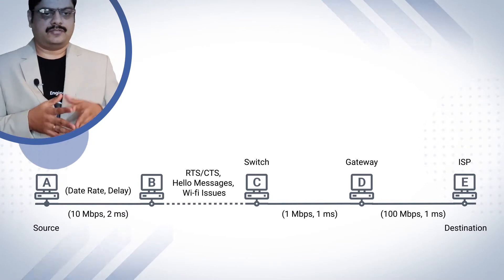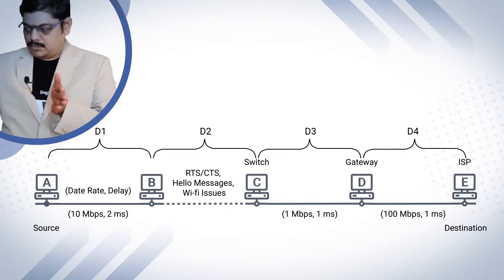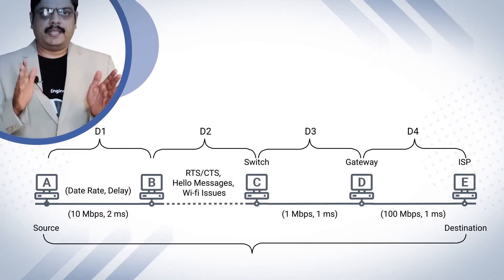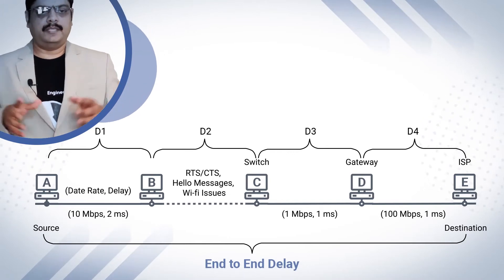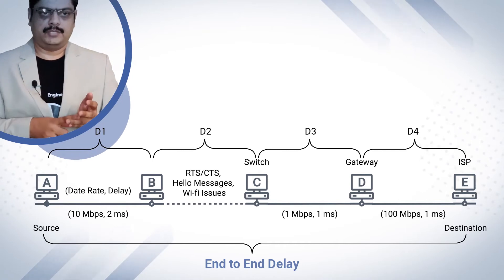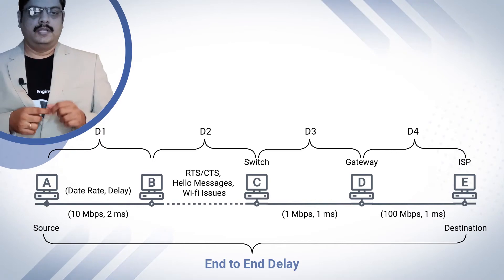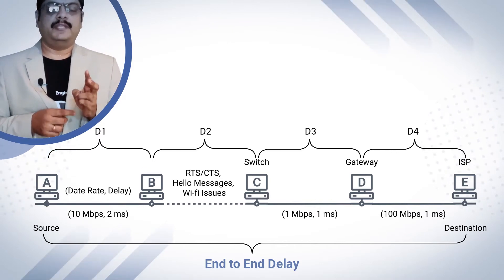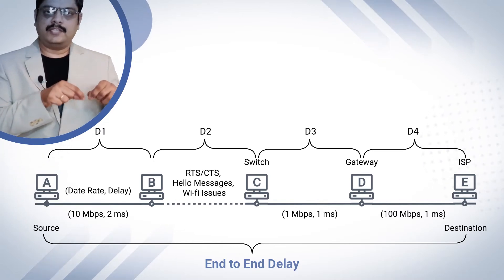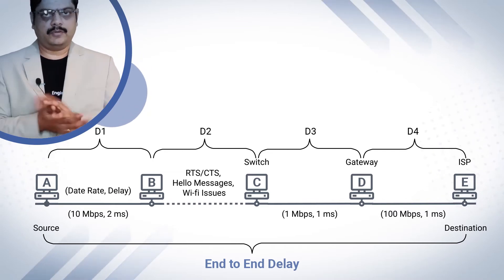Now let's name these delays as D1 (A to B), D2, D3, and D4 — totally 4 delays. The end-to-end delay from A to E will be the sum of all 4 values: D1 + D2 + D3 + D4, from source to destination. Please note: the delay between 2 nodes alone is not an end-to-end delay — it will simply be a delay. When you add up all the delays together, you get the end-to-end delay between source and destination.